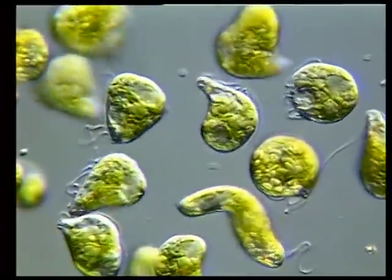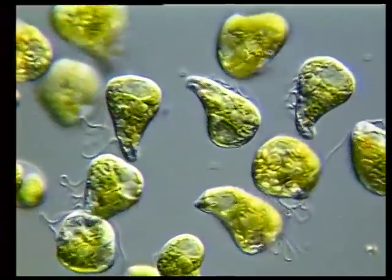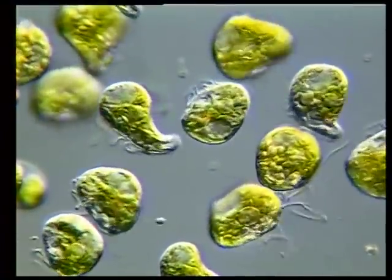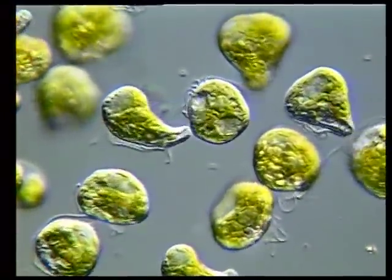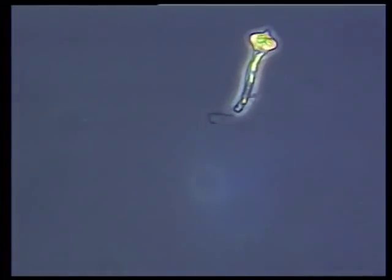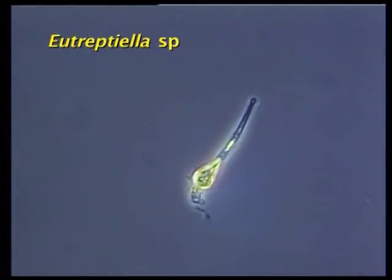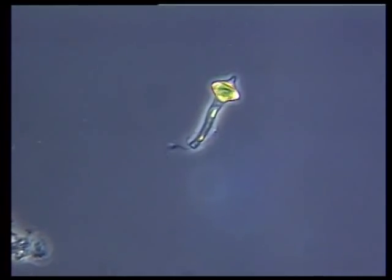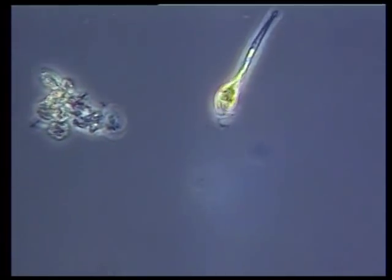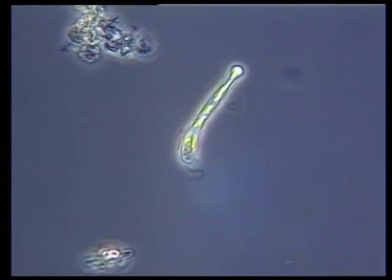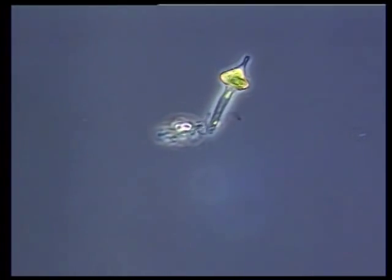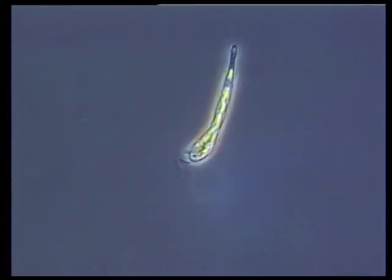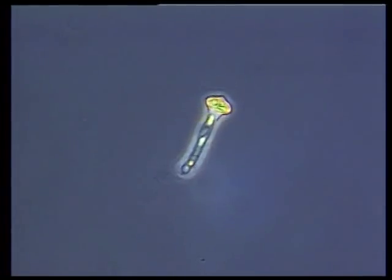In contrast to the rigid species, other euglenoids have a much more flexible pellicle, which accommodates a distinctive and unusual writhing motion called metaboli. The free movement of the cell contents inside this flexible wall suggests that metaboli is driven by the pellicle. The purpose of this extraordinary churning activity is not known, but it is so characteristic that it is often called euglenoid motion.